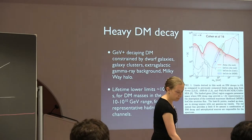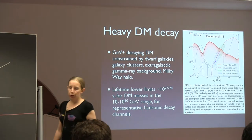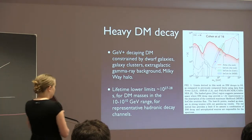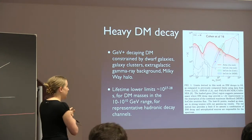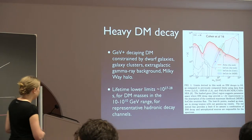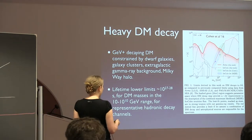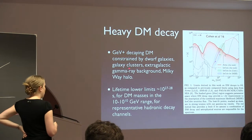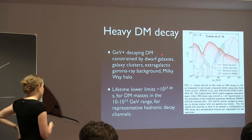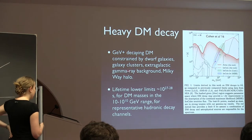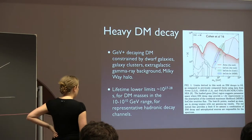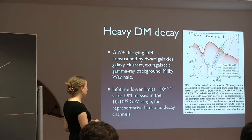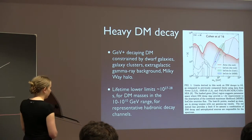Those are the leading constraints on photon-rich channels or line channels for GeV-plus dark matter annihilation. You can do something similar for dark matter decay. A recent paper looked at constraints on decaying dark matter from dwarf galaxies, galaxy clusters, the extragalactic gamma-ray background, and the Milky Way halo, using both Fermi data and neutrino data from IceCube.